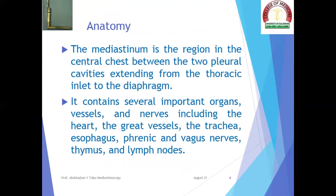The mediastinum is the region in the central chest between the two pleural cavities, extending from the thoracic inlet to the diaphragm. It contains several important organs, vessels, and nerves, including the heart, the great vessels, the trachea, esophagus, phrenic and vagus nerves, thymus, and lymph nodes.